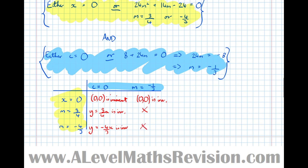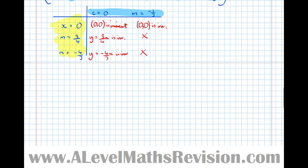Therefore y equals ¾x is invariant, and y equals minus four thirds x is also invariant. Note these might be general invariant lines or lines of invariant points — we'd have to apply the lines-of-invariant-points method to check — but we've fulfilled the criteria of the question by finding the invariant lines.